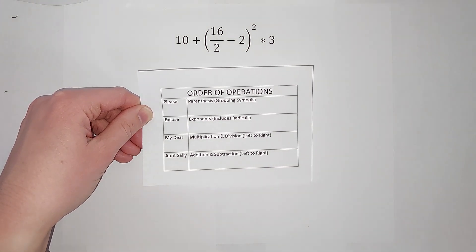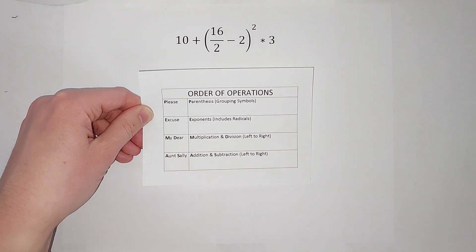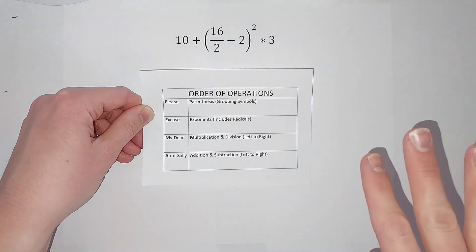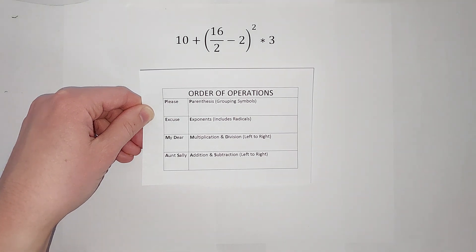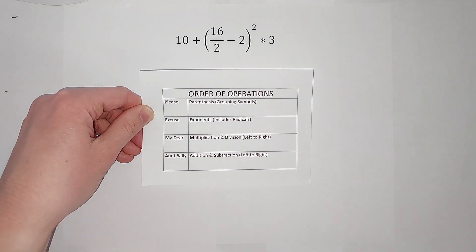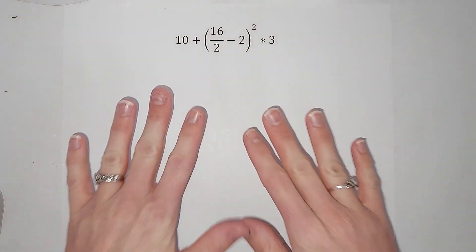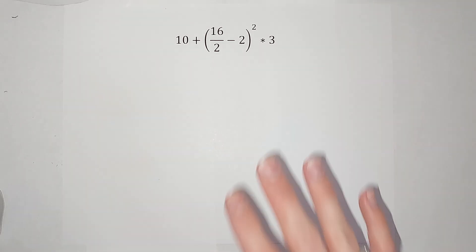My Dear is for multiplication and division—you go from left to right. And A and S is for addition and subtraction, again left to right. I'm going to do this example. If you need some more examples, I will link a video in the corner.